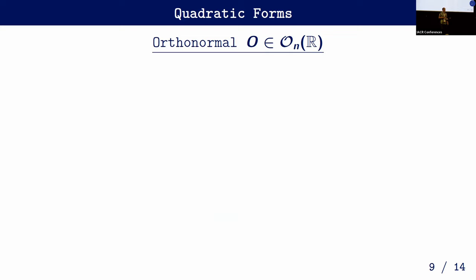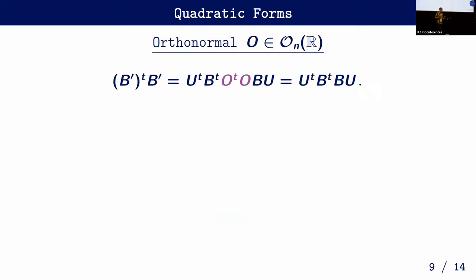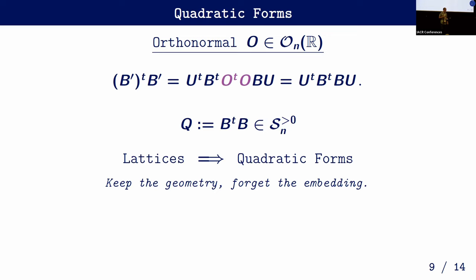The first problem — the orthonormal transformation — is already solved in the literature on the lattice isomorphism problem. Instead of working with bases, we move to the Gram matrix of a basis: the matrix of all pairwise inner products between basis vectors. If we look at the Gram matrix of B', the orthonormal transformation cancels out in the middle, giving an equation that only depends on the Gram matrices of the two bases.